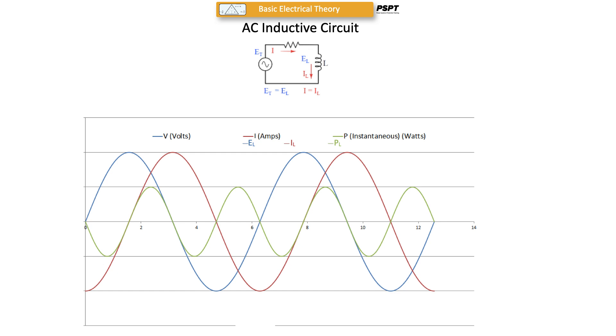You'll notice that when the current slope is zero at the crest of its wave, the voltage is just crossing the zero line. So voltage is zero, hence power is zero, and indeed that's what the green line shows here.